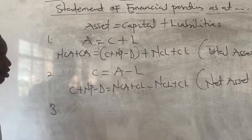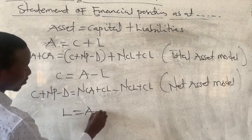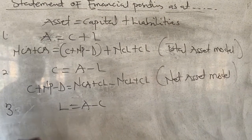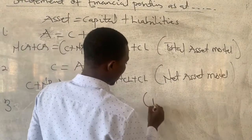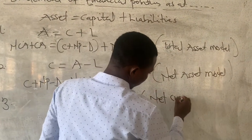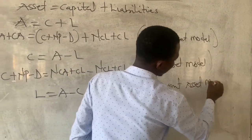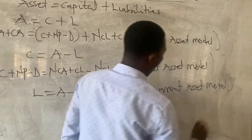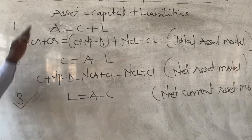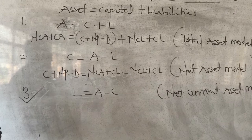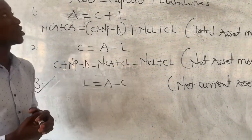The third model is where liability equals assets minus capital. We call it the net asset model or the working capital model. We will be using this third model to prepare and show the format of the statement of financial position, though the other two models can also be used to show the financial position of a sole trader.